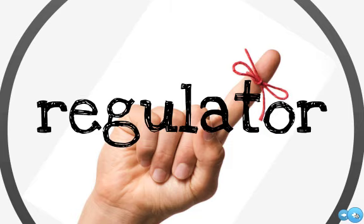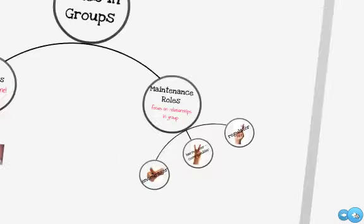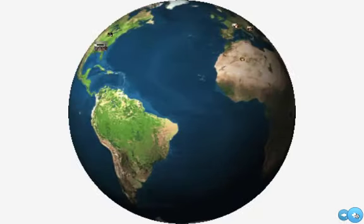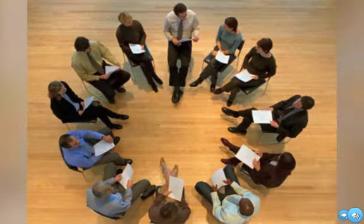Although not every group communication setting has each of these roles present, notice when they do appear in group communication activities we do in class. Notice as well whether you tend to fill a task role or a maintenance role when communicating within a group, and the ways in which your role fits your personality. Group communication is the reality of your world. Your future will involve strong communication skills within a group, whether that group meets in person or through the use of technology.